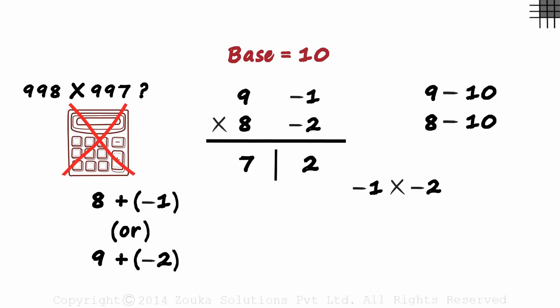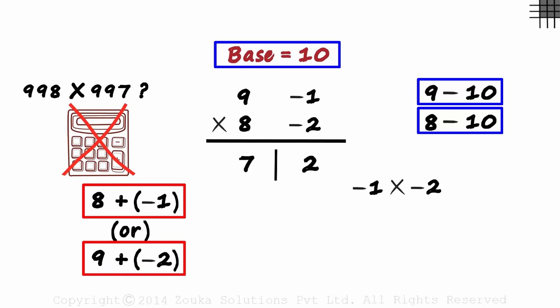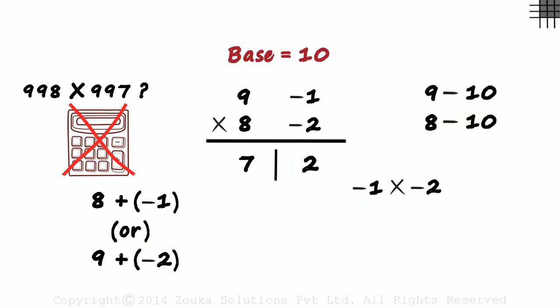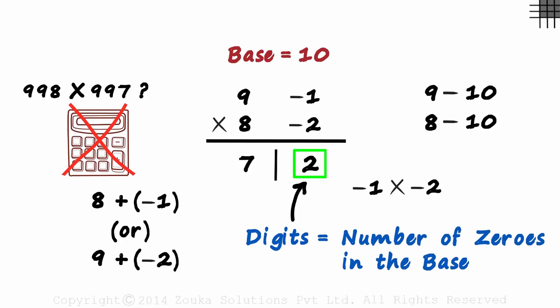The steps are simple. We find the base, then subtract it from each number. Write the sum on the left and the product on the right. Is there anything we need to be careful about here? Yes! On the right, the number of digits should be equal to the number of zeros in the base. Here the base has one zero. So we write just one digit on the right. Don't worry! Everybody thinks this is difficult at first. So let's quickly solve a couple of problems and you will see how simple this technique actually is.